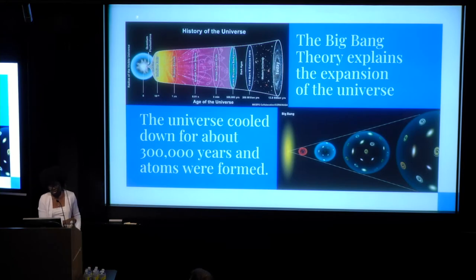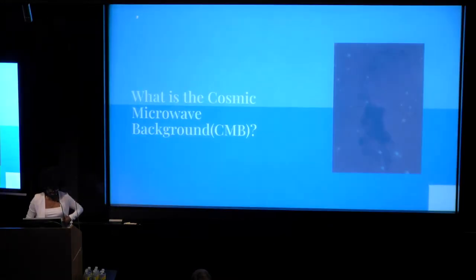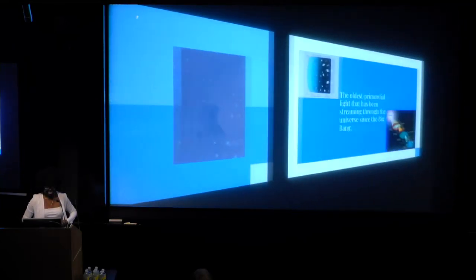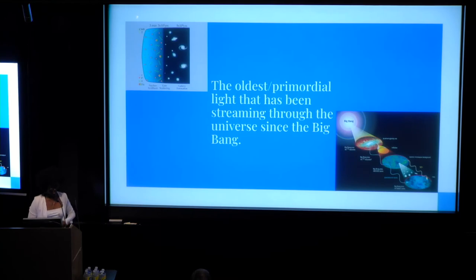During the 300,000 years cooling, the cosmic microwave background was there through it all. The cosmic microwave background is also known as the CMB. It's like the oldest light streaming through the universe. It's been there since the Big Bang.